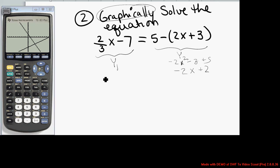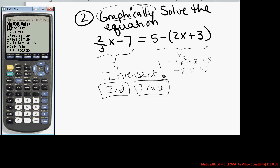So we want to find the place where they intersect. We're going to hit second, trace, and then we're going to find option 5, which is intersect. Select option 5, intersect.